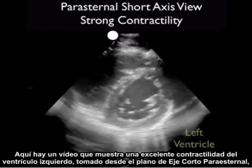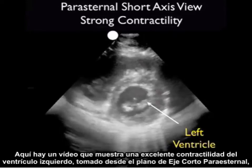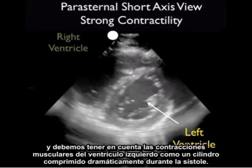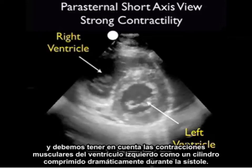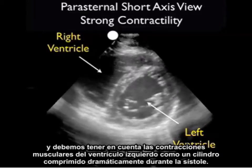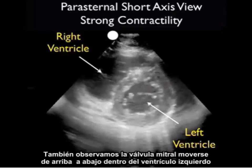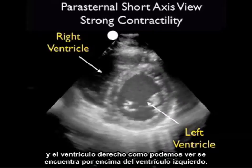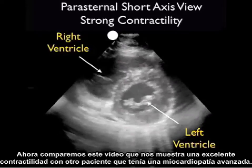Here's a video clip showing excellent contractility of the left ventricle as taken from the parasternal short axis plane. Note the muscular contractions of the left ventricle as a cylinder squeezing in dramatically during systole. We also note the mitral valve flipping up and down within the left ventricle, and the right ventricle as seen up and above the left ventricle.